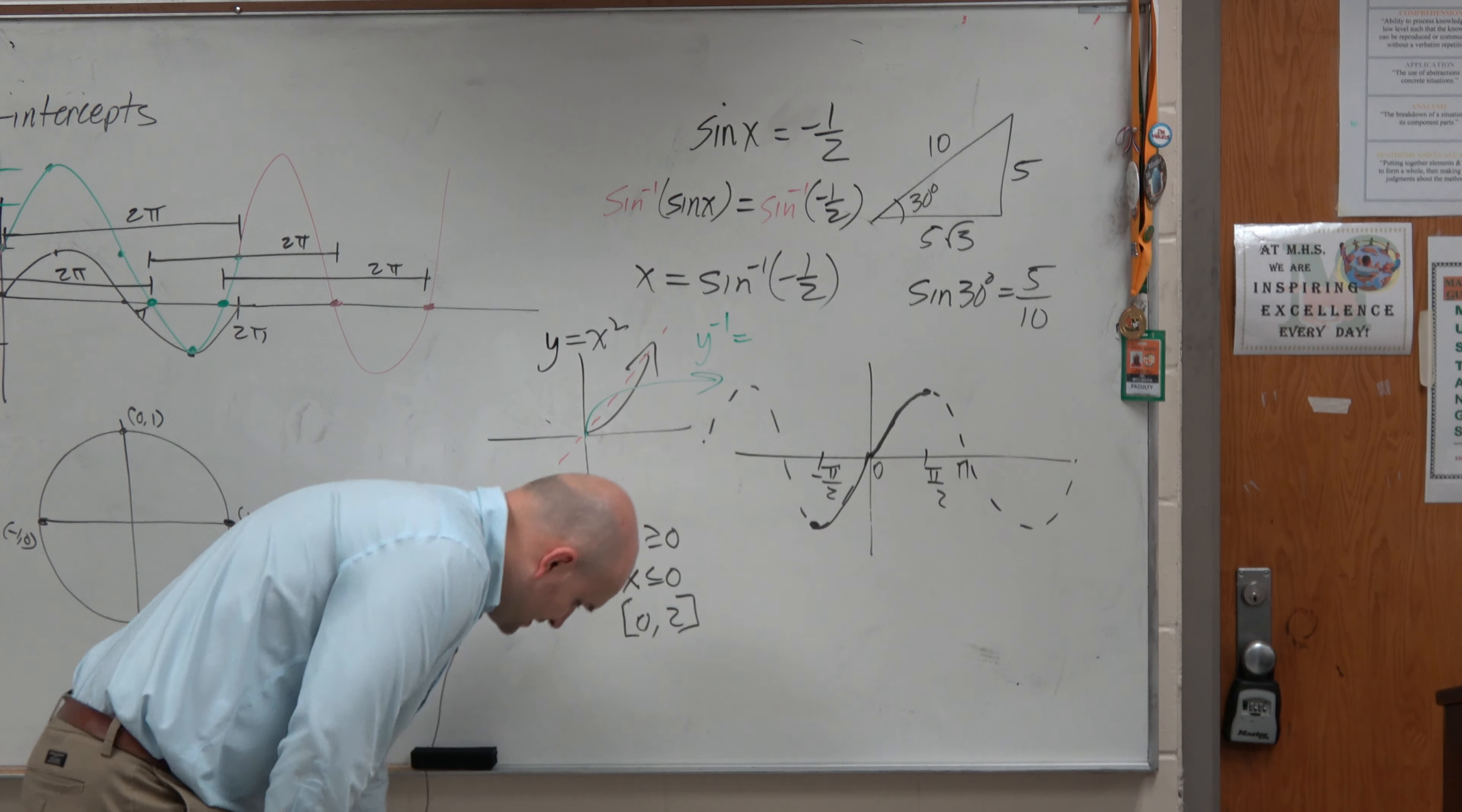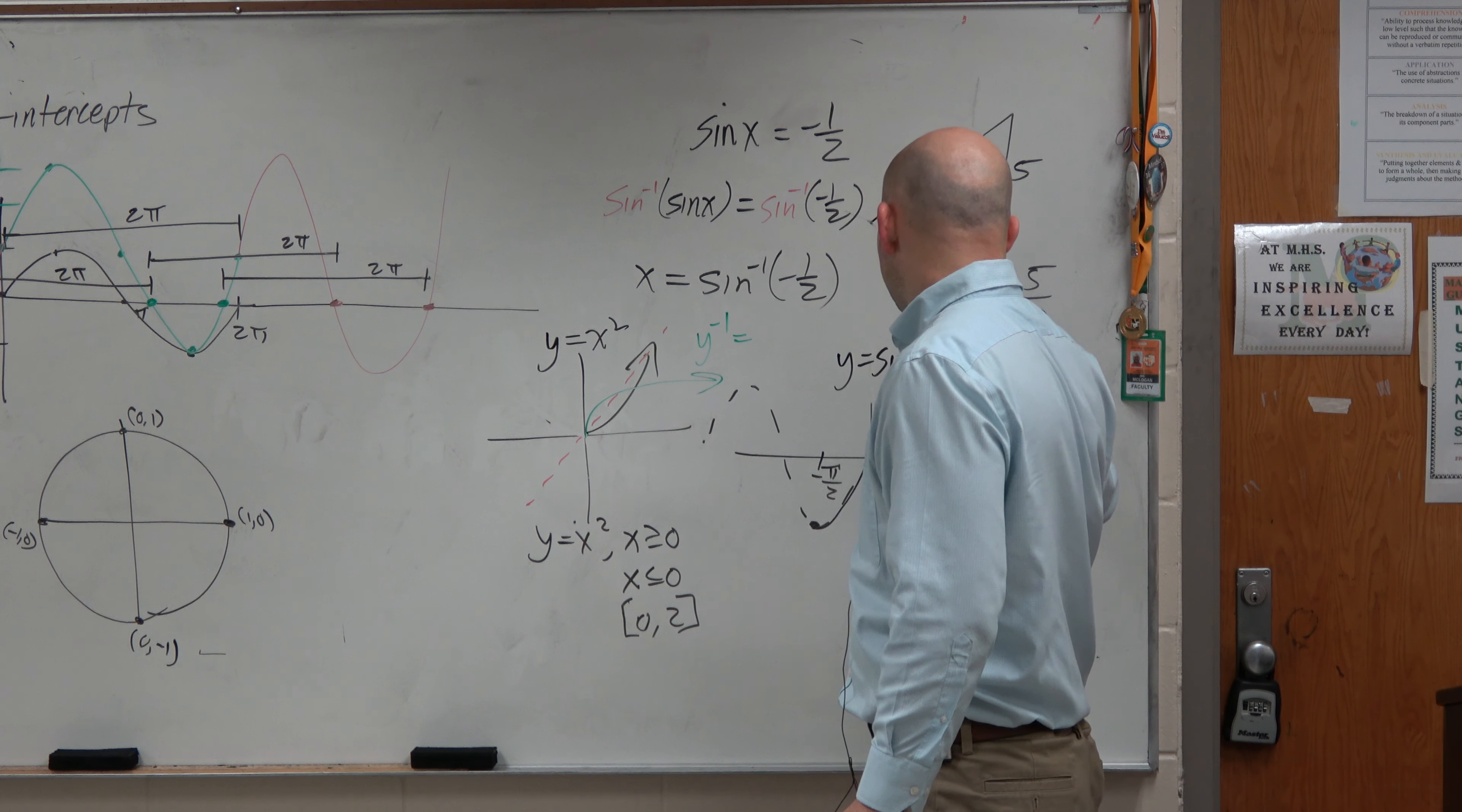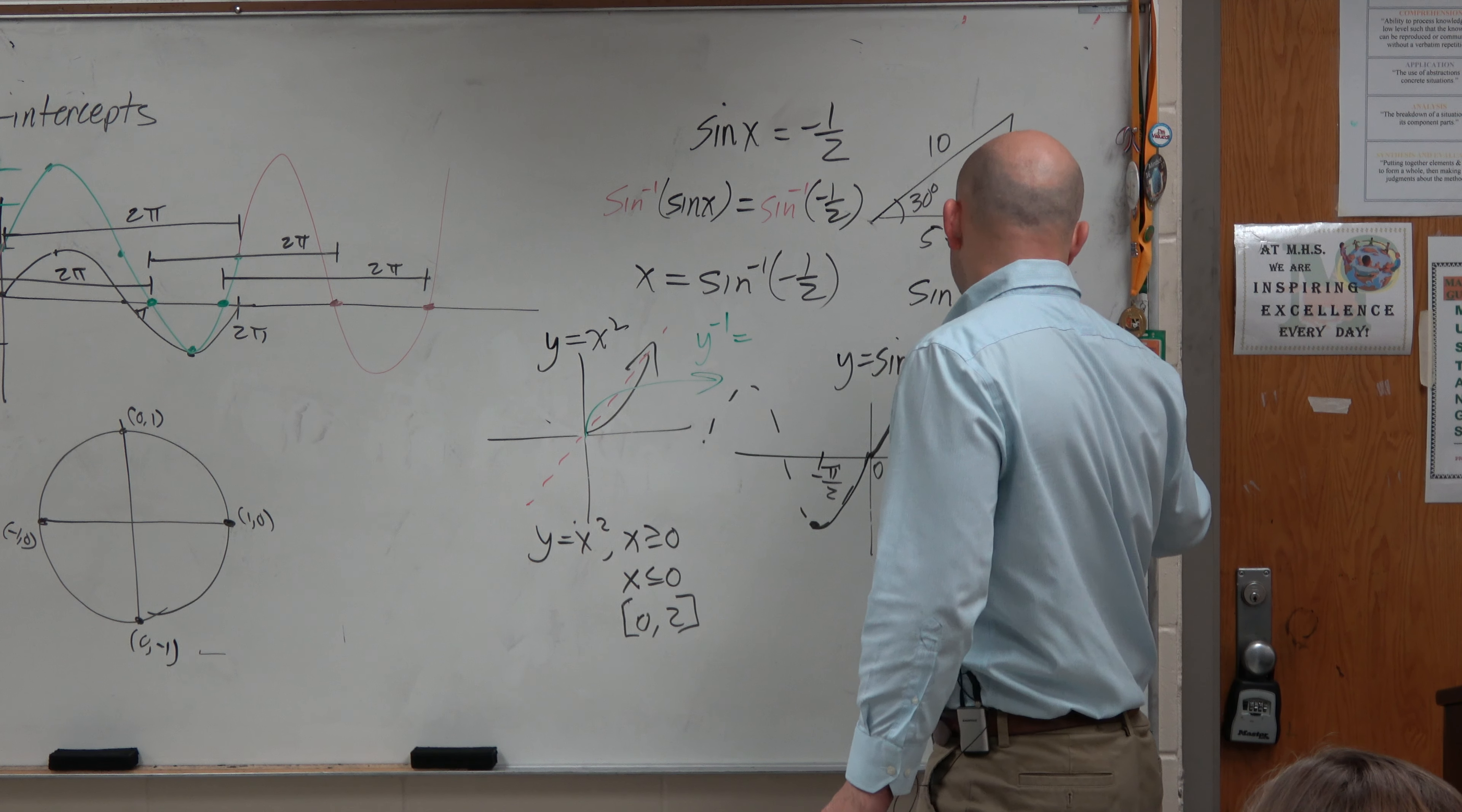So the important thing that I need you guys to understand is this is giving us a restriction. Here is y equals sine of x, but now it's being restricted from negative pi over 2 to pi over 2. Now, why,